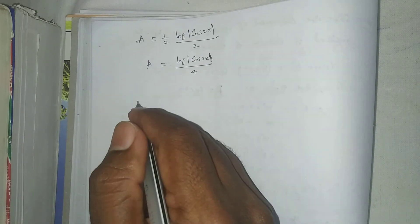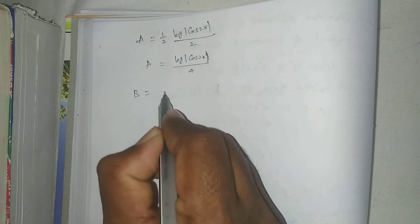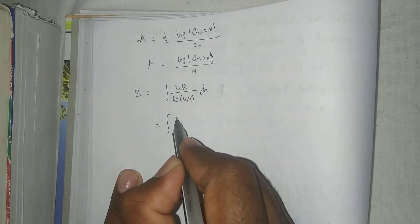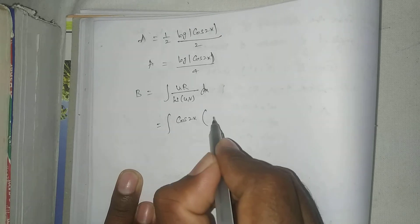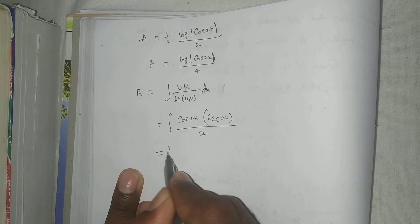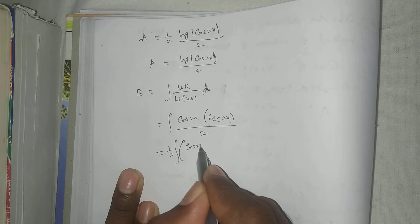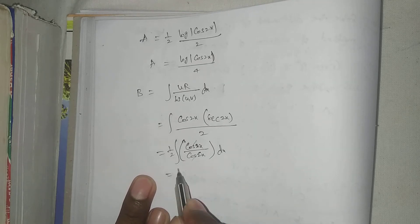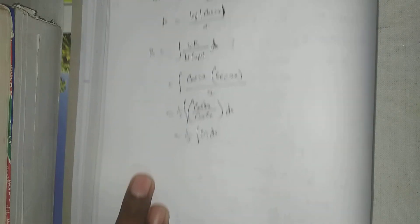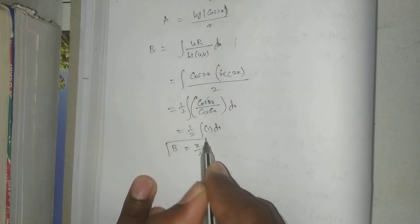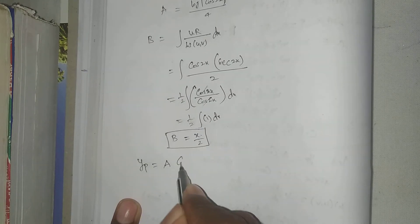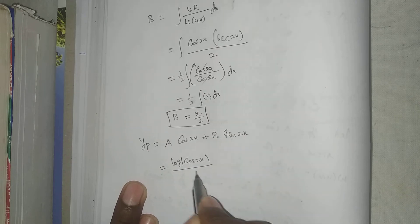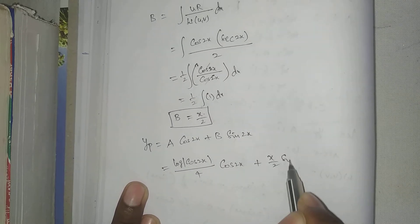Capital B equal integral u r by w of u comma v dx. That equal to 1 by 2 integral cos 2x secant 2x dx. Cos 2x cancel, 1 by 2 integral 1 dx, that equal to x by 2. Now particular integral a into cos 2x plus b into sin 2x equals log mod cos 2x by 4 cos 2x plus x by 2 sin 2x.